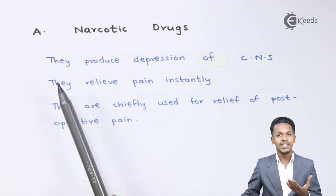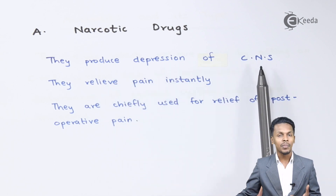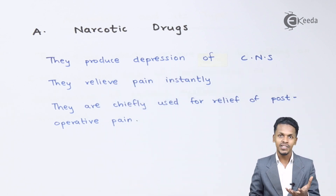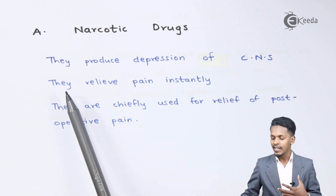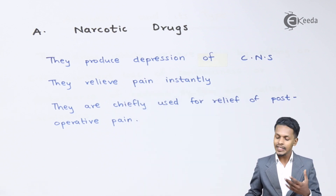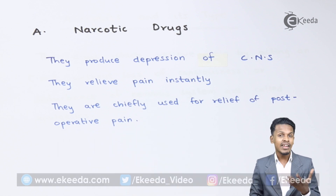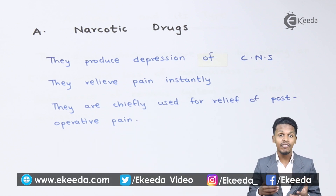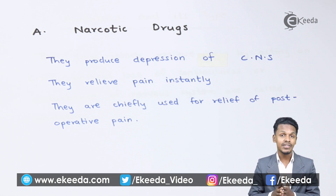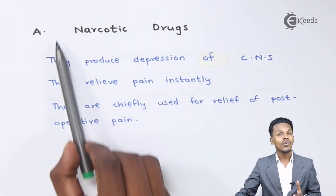Narcotic drugs produce depression of the central nervous system because they act directly on it and have a major effect. That is why they relieve pain instantly and also produce sleep. They are chiefly used for relief of post-operative pain but can be very addictive. Examples include heroin, codeine, and morphine.